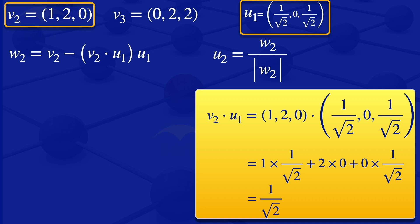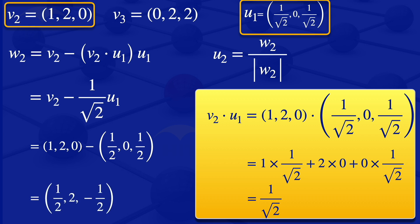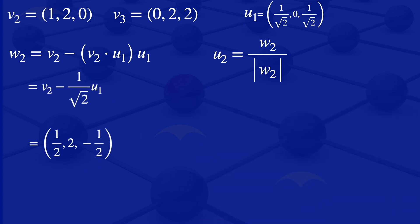We substitute 1 over root 2 for the inner product of V2 and U1. Our W2 then becomes V2 minus 1 over root 2 times U1. Substituting U1, we have 1, 2, 0 minus 1 half, 0, 1 half, which results from multiplying U1 by 1 over root 2. Subtracting those two vectors gives W2 equals 1 half, 2, minus 1 half.